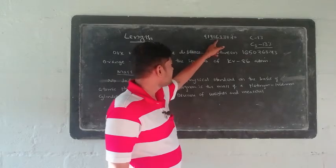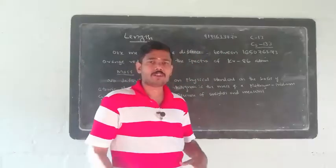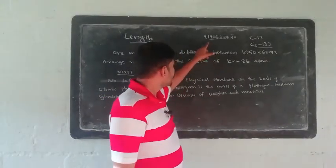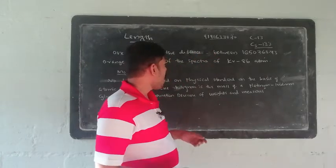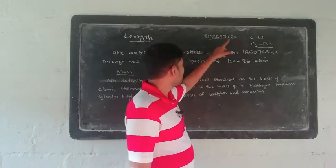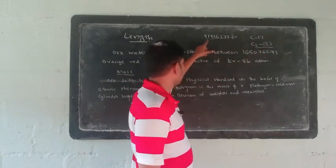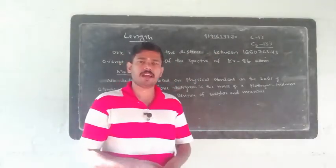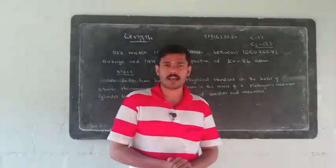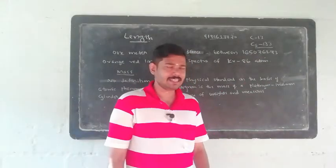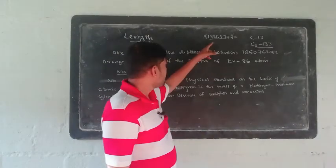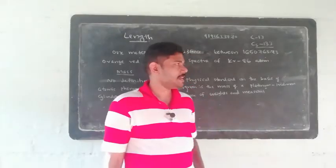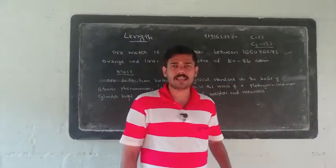The number of atomic transitions that take place between hyperfine structures of the Cs-133 atom is 9,192,631,770. What is one second? It is the time required for 9,192,631,770 atomic transitions to take place between hyperfine structures of the Cs-133 atom.